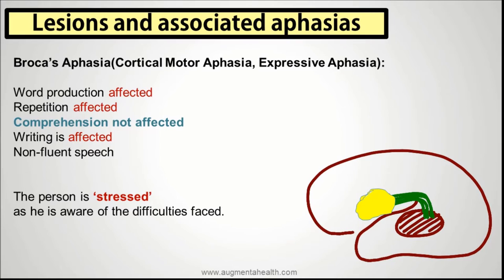Typically speaking, a Broca's aphasia patient might behave like this. If you ask the patient, 'What is your name?' — the response might be labored, something like 'My name is Sunil.' This is a gross description of Broca's aphasia as an example.